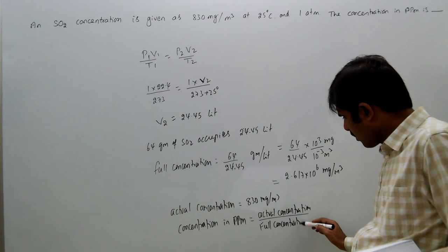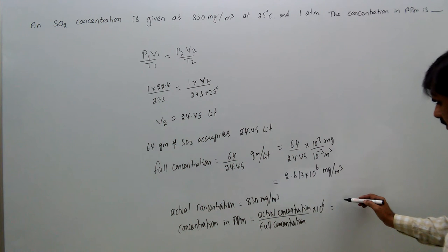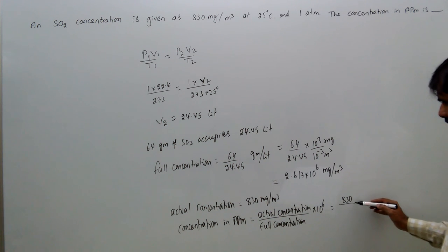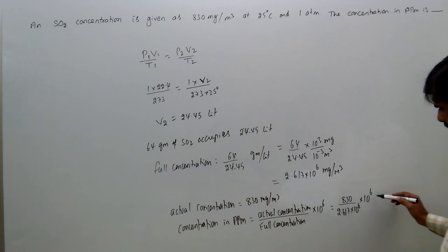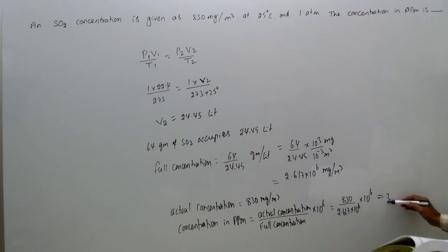So the concentration in ppm is equal to 830 divided by 2.617 into 10 power 6 into 10 power 6, that equal to 317 ppm. So answer is 317.